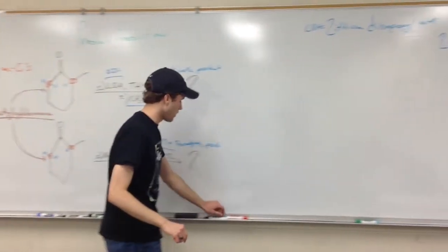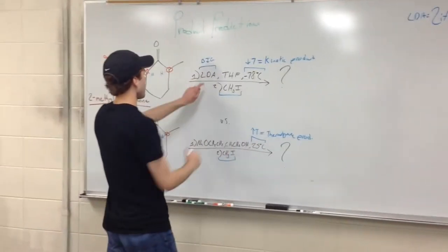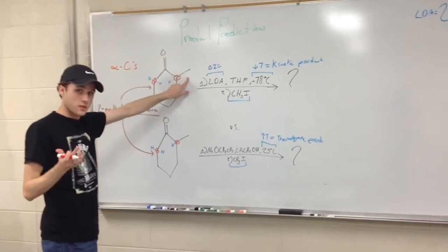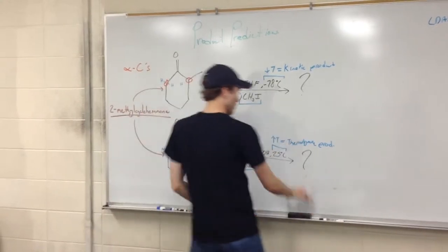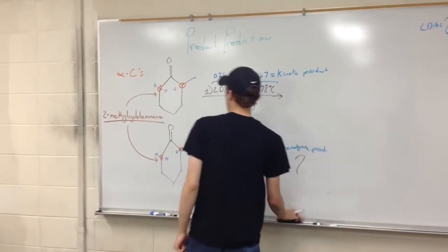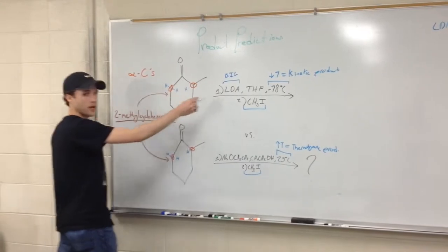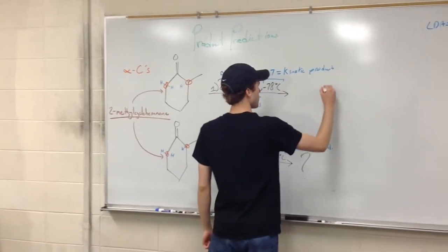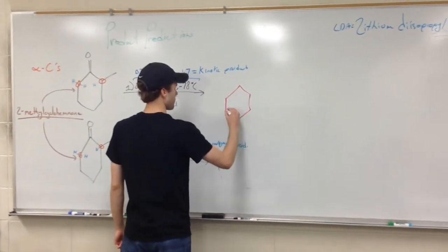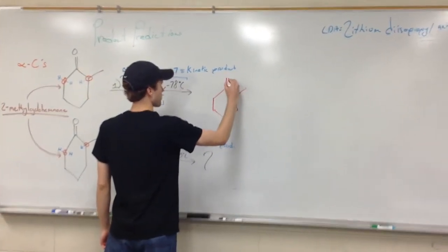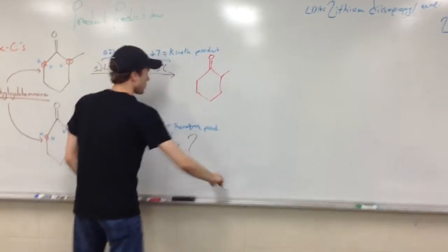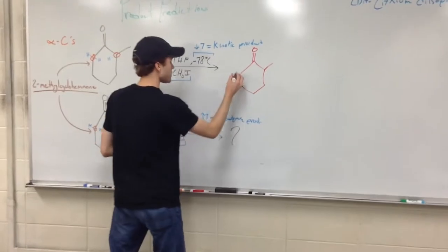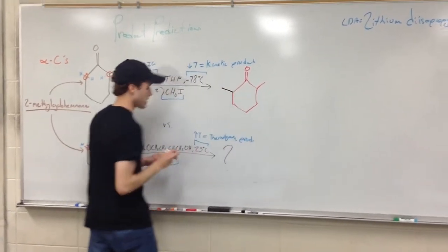LDA is pretty big, so it's not going to want to attack where we have the methyl group because there's going to be some steric strain there. We'll end up attacking the hydrogens on the other end and adding our methyl group to the other alpha carbon. So the methyl group will be added to that less hindered alpha carbon.